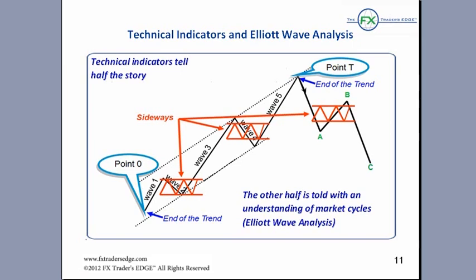Moving averages do a great job of getting a trader long in an uptrend, even though they are lagging indicators that get traders in late. But the information provided from moving averages lacks depth. Do the moving averages say anything about how the price action relates to the overall direction of the cycle? Is the trend new, or is it part of the bigger trend? If the trend is down, how far down will it go? Moving averages give clues as to what part of the market cycle we are in, but until you understand Elliott Wave Analysis, you don't really know what to look for.